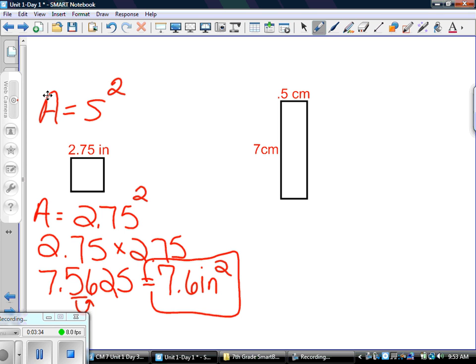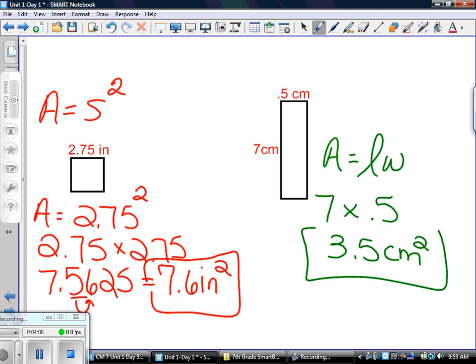Let's look at the rectangle now. The formula for a rectangle's area is area equals length times width. In this figure, if we multiply the length and the width, we're going to take 7 times 5. In that case, we will get 3.5, and again, square units—so 3.5 centimeters squared. So far, we've found the area of a square and a rectangle.